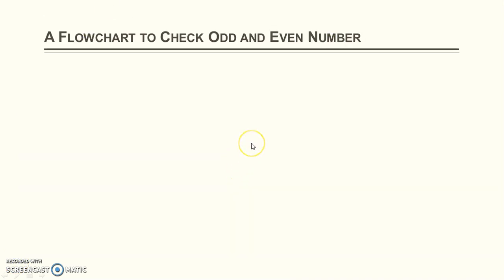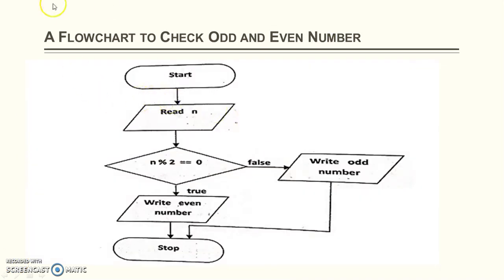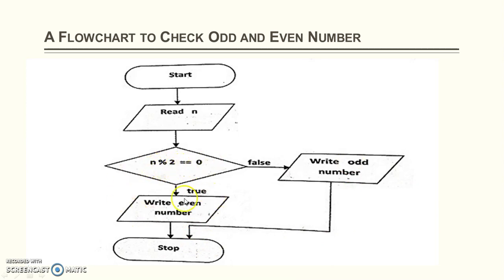Let's take another example based on a decision — drawing a flowchart to check whether a number is odd or even. We read one number from the user, then check whether the number is odd or even. If n modulo 2 equals 0, the number is even; otherwise the number is odd. For example, if n equals 5, then 5 modulo 2 equals 1, so this condition is false and the number is odd. If n equals 4, then 4 modulo 2 equals 0, meaning the number is even. This is the entire flowchart that checks whether a number is odd or even.